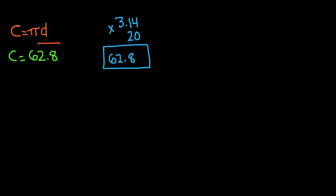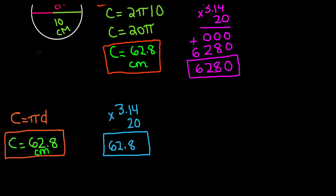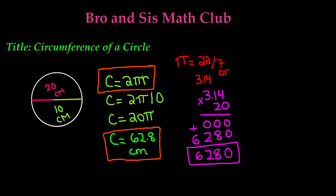So our circumference is equal to 62.8 centimeters — and don't forget the units. That's all for this video. I hope you guys learned how to find the circumference of a circle, and we will see you in our next video. Bye!